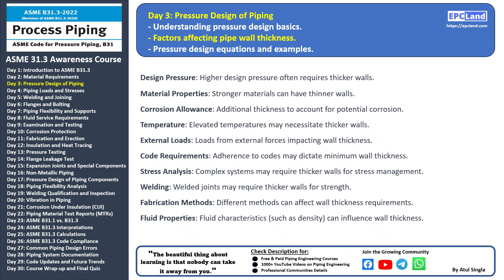Hello and welcome back to our 30-day beginner course on ASME B31.3. In today's session, we're going to dive into an important aspect of piping design: factors affecting pipe wall thickness. The thickness of a pipe's wall plays a crucial role in ensuring the safety and reliability of the piping system. Design pressure is one of the primary factors — higher design pressure often requires thicker walls to withstand the increased force and stress.